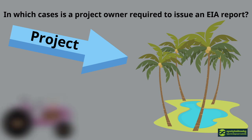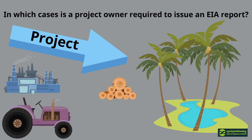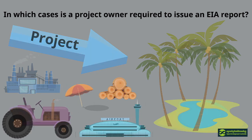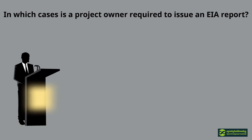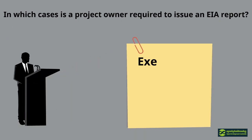Agro-industry, wood and paper production, power plants, tourism, and infrastructure are some of the fields requiring an EIA. However, the sub-decree also includes an exemption for special and crucial projects approved by the royal government.